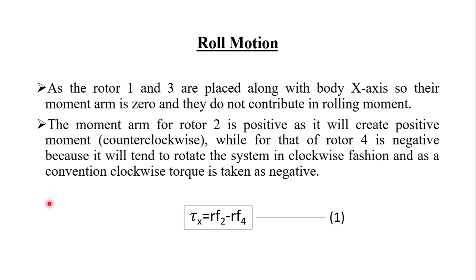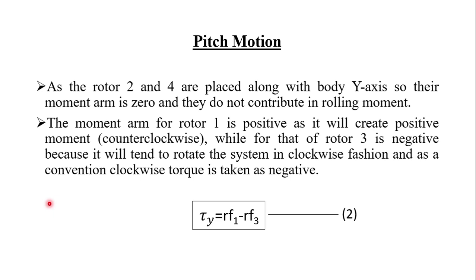The equation for roll torque is: tau_x = r(F2 − F4). This is because the torque from rotor 1 and rotor 3 about the x axis is zero. Rotor 2 provides positive torque (counterclockwise) and rotor 4 provides negative torque (clockwise). For pitch motion, the torque from rotor 2 and rotor 4 is zero. The torque is provided by rotor 1 and rotor 3: tau_y = r(F1 − F3), where rotor 1 is positive and rotor 3 is negative.